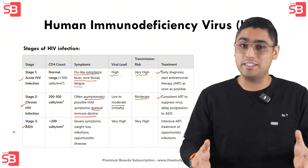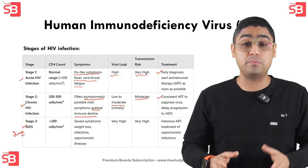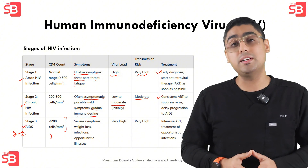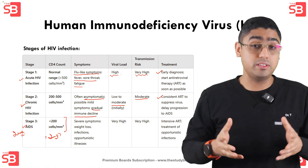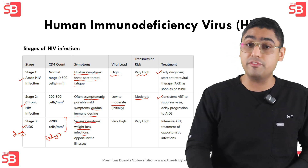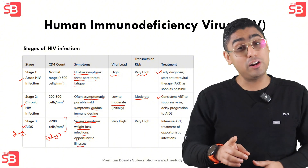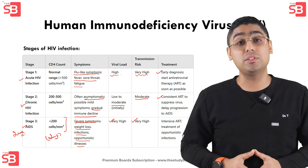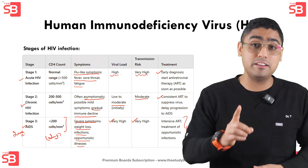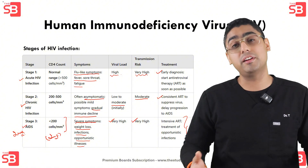The third stage is AIDS — the final and most severe stage, characterized by a critically low CD4 count, which is below 200 cells per mm³. Symptoms are more pronounced, with severe weight loss, frequent infections and susceptibility to opportunistic illnesses. The viral load is very high and transmission risk is also very high. Intensive ART is crucial here along with treatments for other infections.